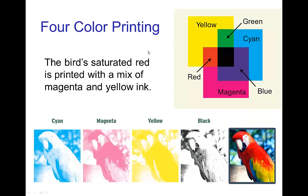Here is an example of four-color printing. The red of the bird's body is where magenta ink and yellow ink are combined, because yellow and magenta combine to make red. In the darker parts of the body, such as under the beak, black ink is also sprayed to give a lower value.